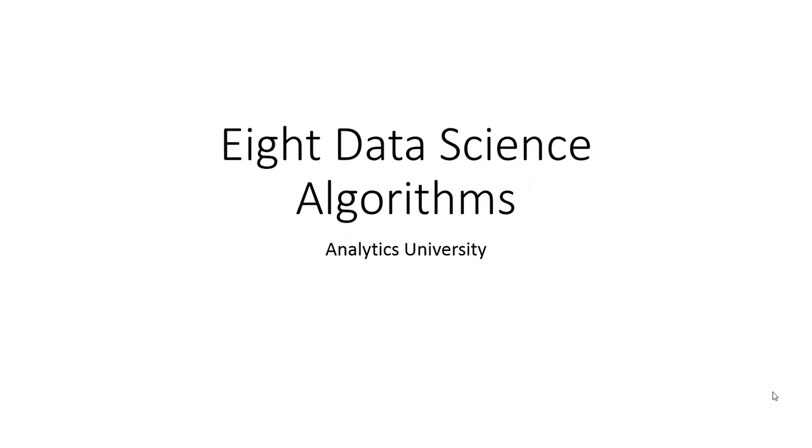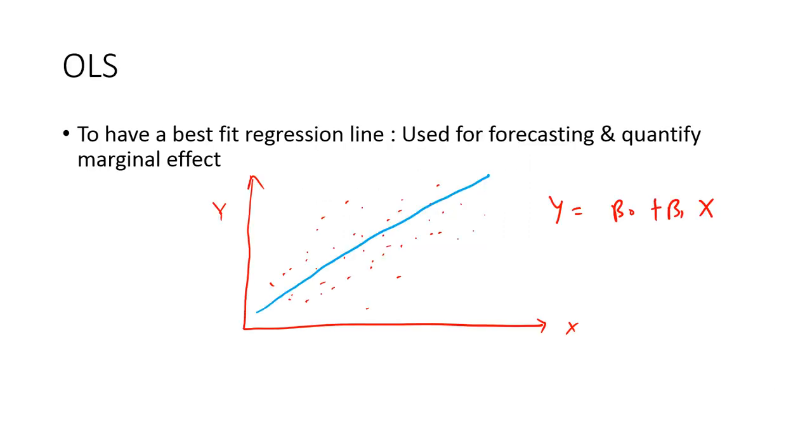Hi, in this video I am going to talk about some of the popular data science algorithms that most data scientists use in daily activities. The first one is the OLS or ordinary least square regression, in short we call it OLS, which stands for ordinary least square.